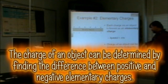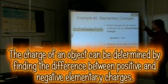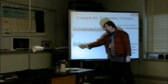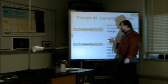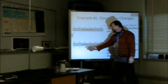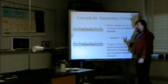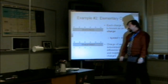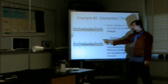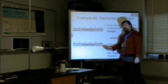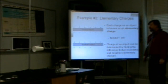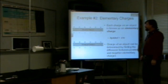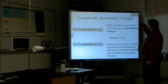The charge of an object can be determined by finding the difference between positive and negative elementary charges. In this example, we have six positive elementary charges and only four negative elementary charges. The difference is six minus four, giving us a plus two elementary charge — because we have two more positive charges than negative charges.